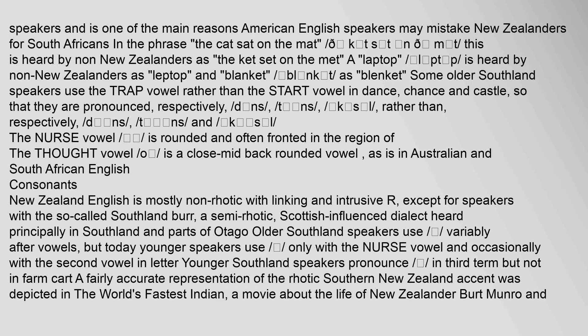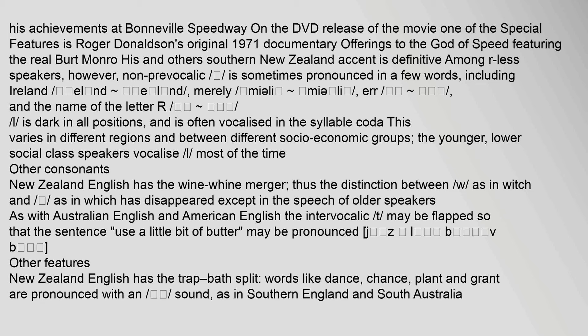A fairly accurate representation of the rhotic Southern New Zealand accent was depicted in the film 'The World's Fastest Indian', about New Zealander Burt Monroe. Among r-less speakers, non-prevocalic r is sometimes pronounced in a few words including 'Ireland' and 'merely'. The lateral 'l' is dark in all positions and is often vocalized in the syllable coda, varying by region and socio-economic group — younger, lower social class speakers vocalize 'l' most of the time. New Zealand English has the wine-whine merger, so the distinction between 'wh' as in 'which' and 'w' as in 'witch' has disappeared except in the speech of older speakers.